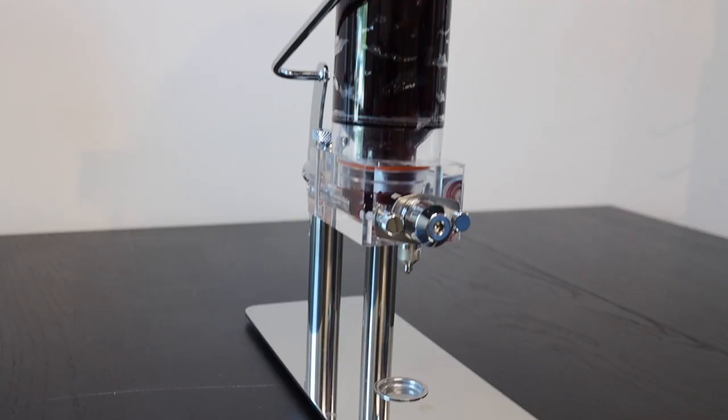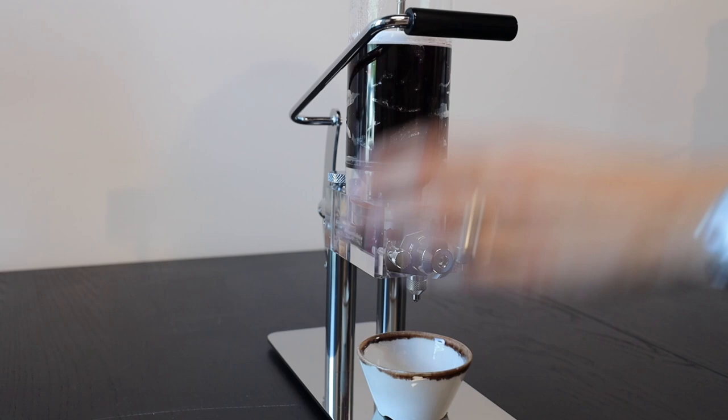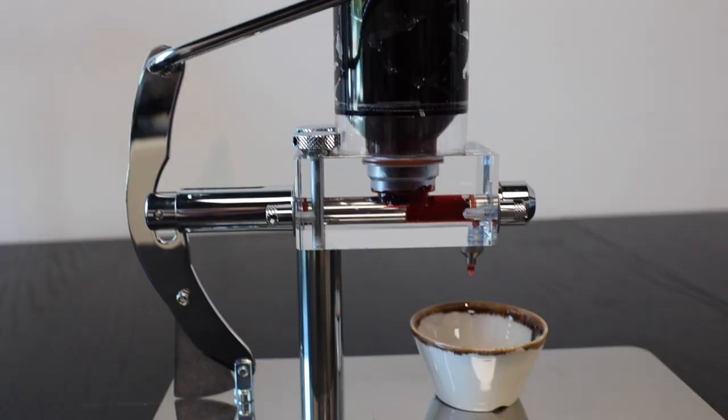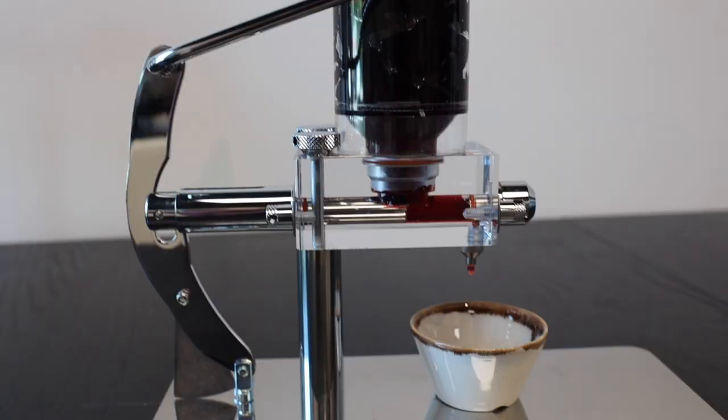The small nozzle is already assembled on the dispenser out of the box. To get the jam or honey to come out, you'll need to push down on the lever. You will have to push several times before the jam or honey starts to come out.